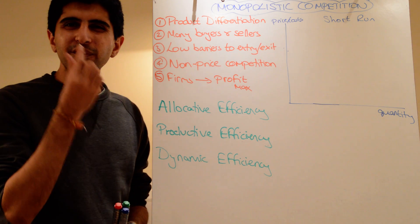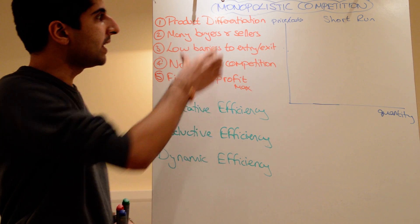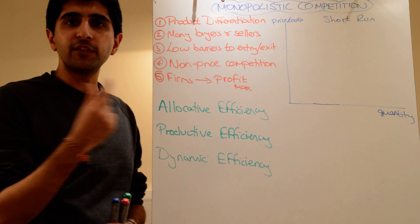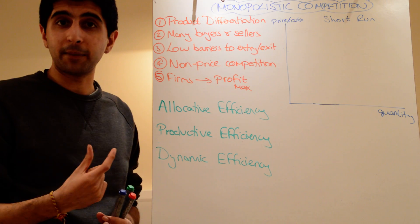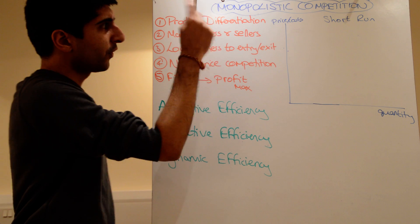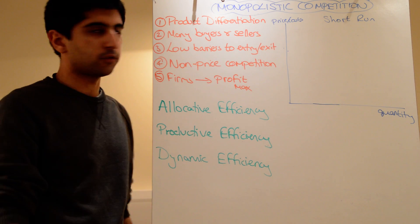But they differ on a very, very small scale, which means that firms in monopolistic competition have a very small degree of price making power. So that is the characteristic that defines this market structure.